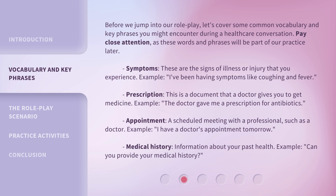Symptoms: These are the signs of illness or injury that you experience. Example: I've been having symptoms like coughing and fever. Prescription: This is a document that a doctor gives you to get medicine. Example: The doctor gave me a prescription for antibiotics.